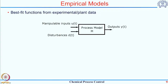A dynamic model gives you a relationship between inputs and output as a function of time. While generating an empirical model, you have a process already built and then you give changes in the inputs — which may be a manipulated input or a disturbance input if possible — and then capture the response of the output as a function of time.